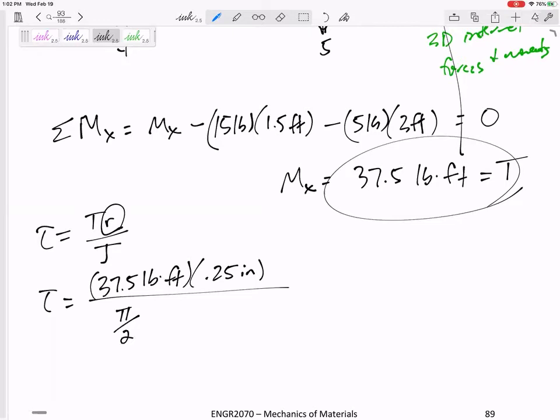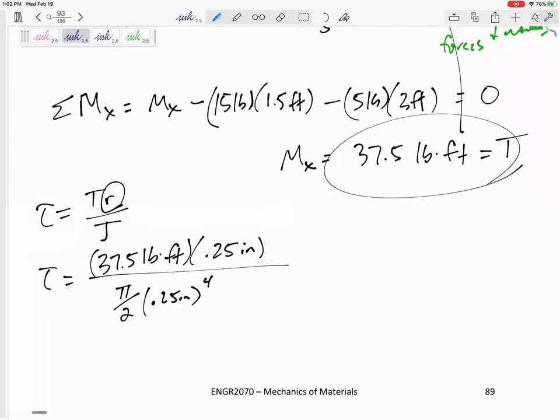Now let's think about these units: pounds, inches, inches to the fourth. I'm going to change that feet to inches. How can I do that? Feet to inches: 12 inches per one foot. All right, so now I've got two inches on top, I've got four inches on bottom, and so that cancels out to just inch-pounds over inch squared, psi. So be careful right there.